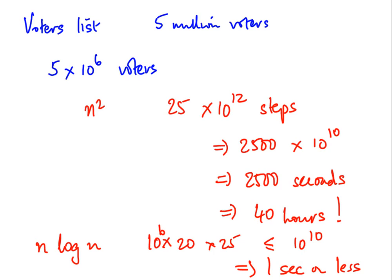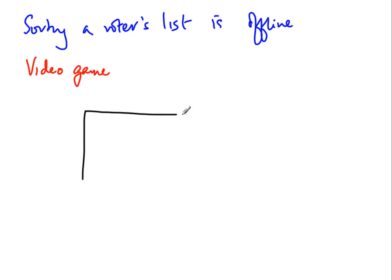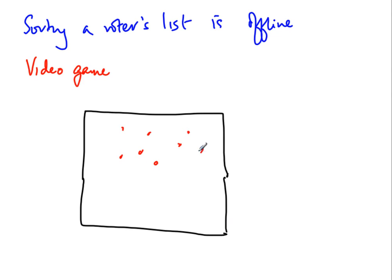One may argue that sorting a voters list is an offline activity — we do it once, publish the list, and don't worry about it again. So if it takes 40 hours or a couple of days, perhaps that's fine. But let us look at another example to see whether that argument holds. Consider some kind of a video game. You have a screen with lots of obstacles, dots, players, and various entities positioned on it.